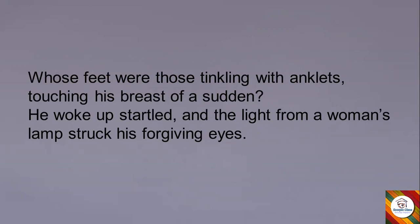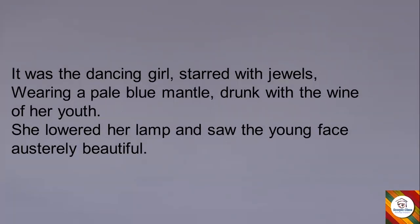Third stanza: 'It was a dancing girl, starred with jewels, wearing a pale blue mantle, drunk with the wine of her youth. She lowered her lamp and saw the young face, austerely beautiful.' This dancing girl was covered in jewels and wearing a pale blue mantle — a sleeveless shawl. 'Drunk with the wine of her youth' means she was very proud of her youth, wealth, and beauty. She lowered her lamp and saw his young, austerely beautiful — simple yet very beautiful — face.